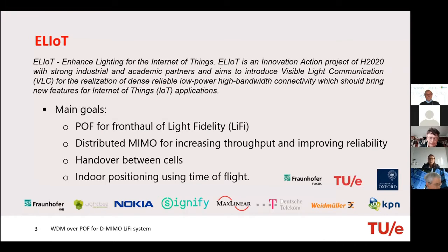The project ELIOT comes from Enhanced Lightning for the Internet of Things. It is an innovation action of Horizon 2020. We work together with industrial and academic partners to develop visible light communication to bring new features for IoT applications. The four main goals of the project are to use PoF as front-haul for Li-Fi systems and to apply Distributed MIMO for increasing throughput and improving reliability of our system, implemented in the wireless parts.